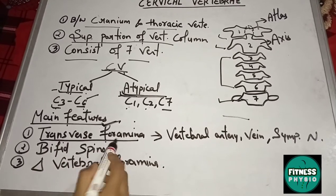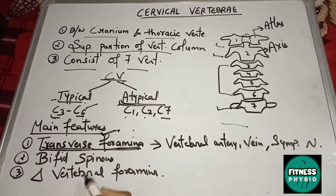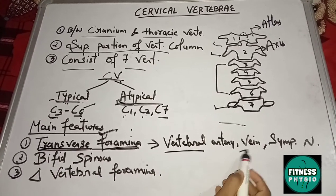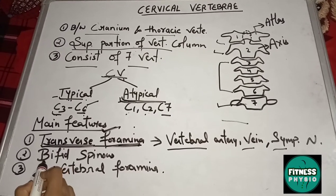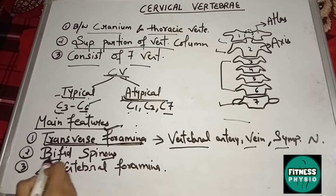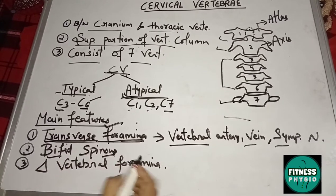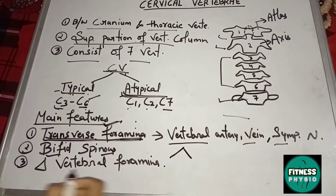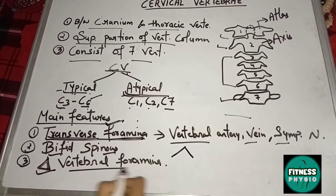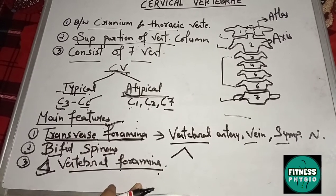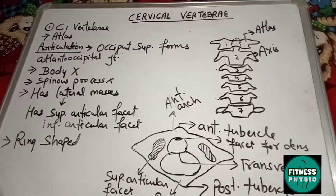The transverse foramen is a hole in the transverse process through which the vertebral artery, vein, and sympathetic nerve pass. Cervical vertebrae also have a bifid spinous process, meaning the spinous process is divided into two parts. Additionally, they have a triangular vertebral foramen.